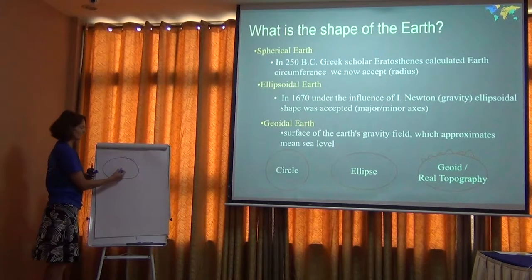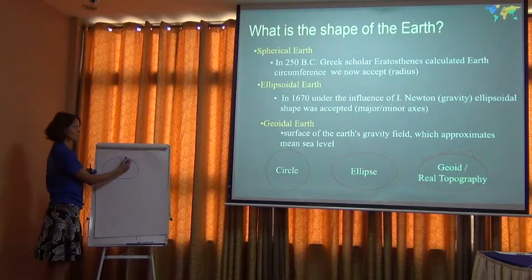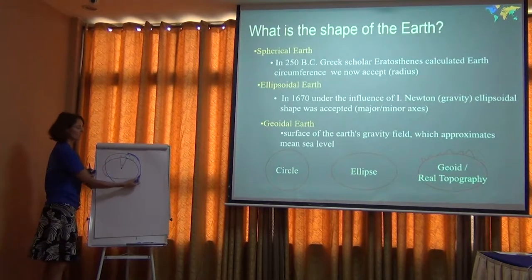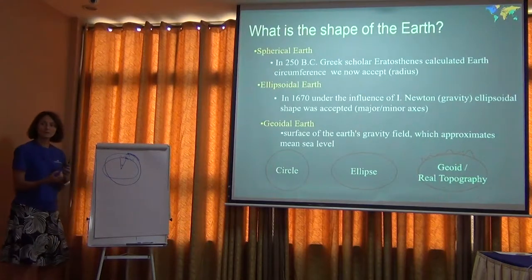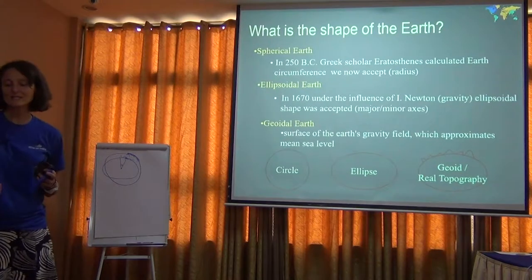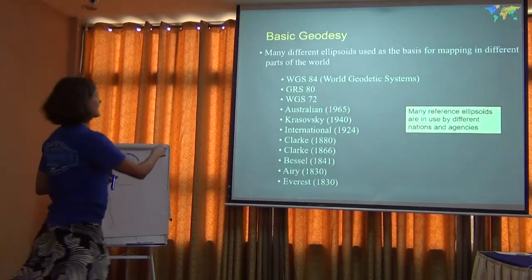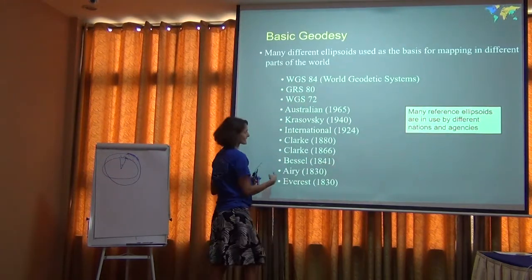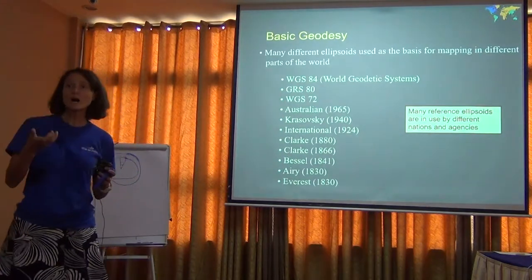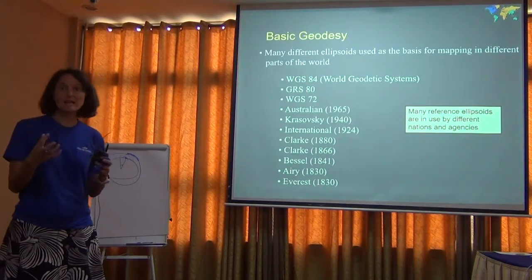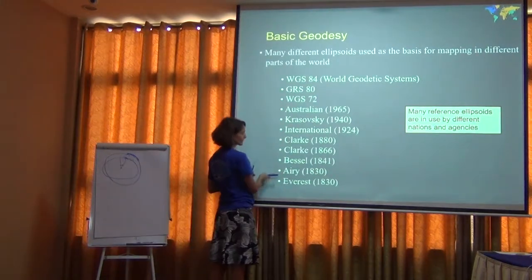It matters what the shape of the Earth is when you're measuring things in angles. If you're approximating the Earth as a sphere, your location would be here. But if you're approximating it as an ellipsoid, your location would be here. So that choice really matters — and that choice is the datum. WGS 1984, Clark 1866 — those are all datums. They are 3D models of the planet, and different datums do a better job at different places in the world.